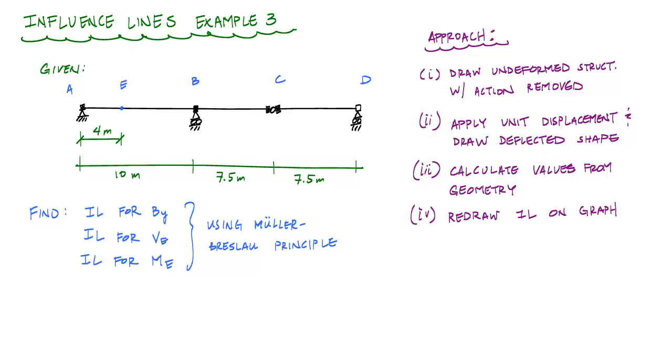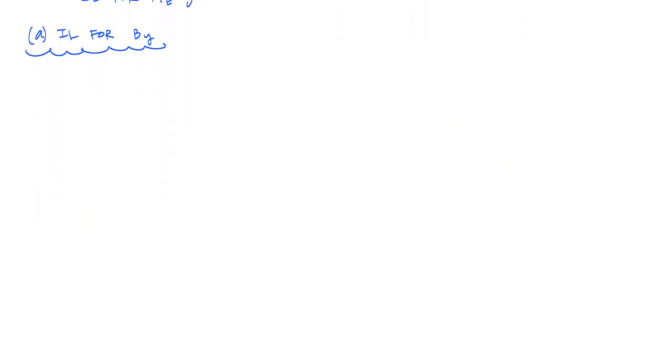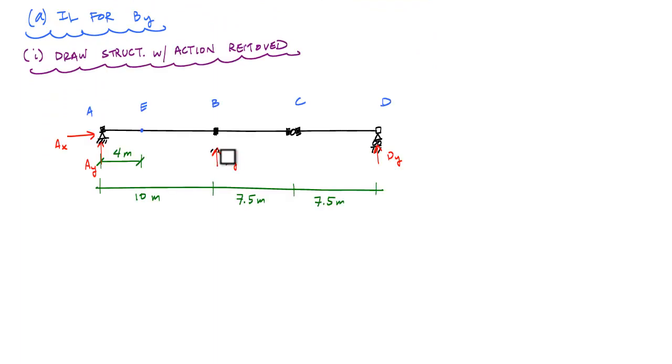The first thing we want to do is draw the influence line for the vertical reaction at B. In order to do that, I'm going to follow the process. I'm going to draw the undeflected shape with the vertical reaction removed. So I've gotten rid of the action.